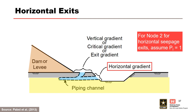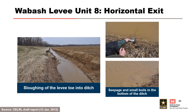Backward erosion piping channel formation can initiate at two potential locations near the embankment toe, though both would not form simultaneously. Upward vertical hydraulic gradients are resisted by gravity and relate to the potential for heave or blowout. However, gravity is not a resisting force for horizontal or nearly horizontal gradients, and little to no horizontal gradient is required for initiation of backward erosion piping — reflected by the event tree note to assume a probability of initiation of one for horizontal exits. At Wabash Levee Unit 8, a farmer dug a ditch at the landside levee toe creating a horizontal seepage exit, and the levee ultimately breached.